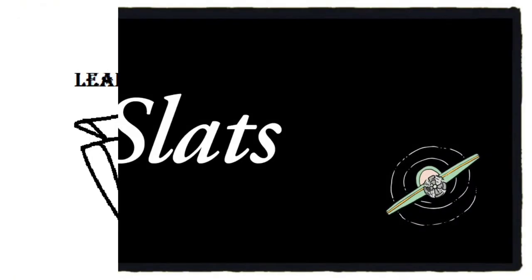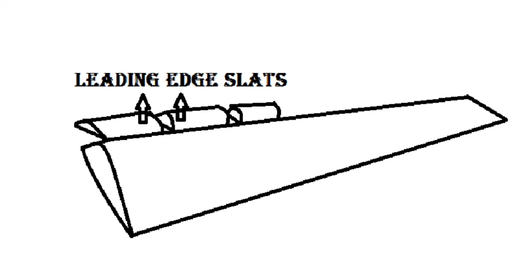Slats: Flaps are trailing edge devices. Similar to that of flaps there are leading edge devices called slats. These are extended forward to increase the camber during take off and landings. Slats allow the aircraft to operate at high angles of attack. When slats are operated completely they leave gaps between leading edge and trailing edge called slots.